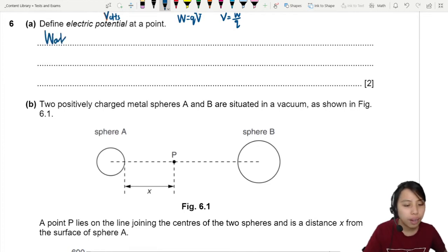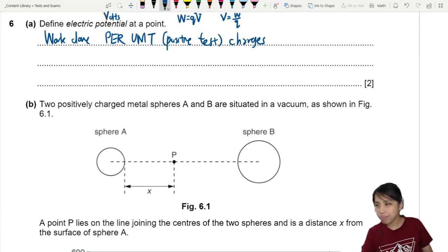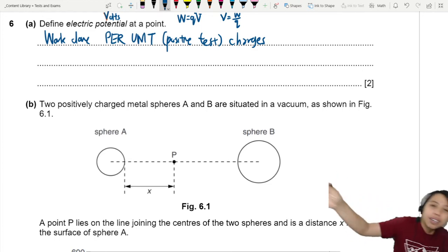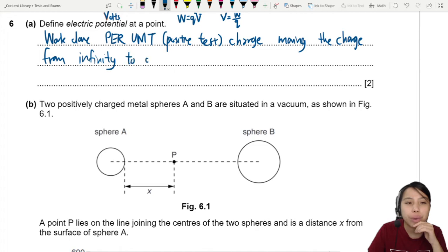Potential is work done per unit charge to move it around in electric field. So we can say this is the work done, and very importantly, per unit charge. If you want to be more specific, you can say this is per unit positive test charge. That's the best prime definition. Work done to do what? To lift it up, to move it around. You want to talk about moving from infinity, means very far away from infinity, move it closer to a point.